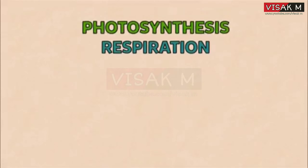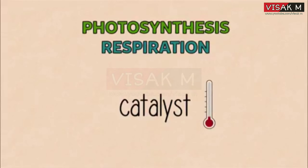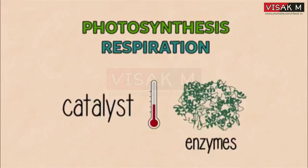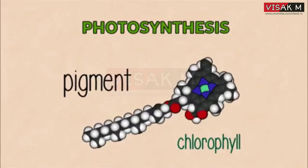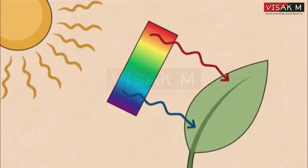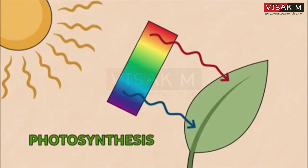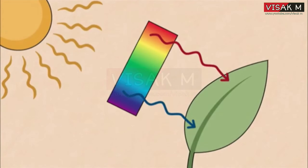Let's look at these two processes more closely. They both need catalysts to enable them to work at normal temperatures. These catalysts are called enzymes. Photosynthesis also needs a pigment called chlorophyll. The active site is a magnesium atom, coloured green in this model, which absorbs blue and red light from the sun's spectrum to drive the photosynthesis reactions, leaving the green light to be reflected, making the leaves look green.